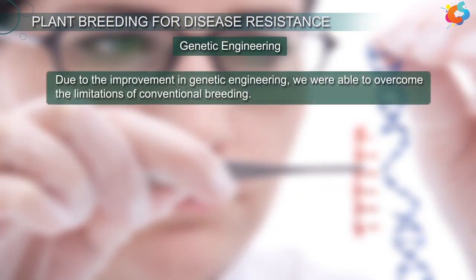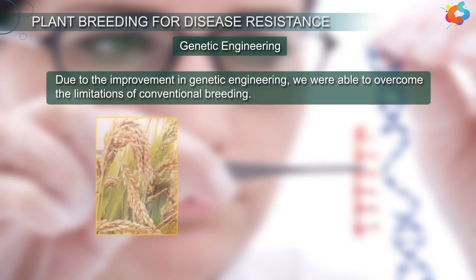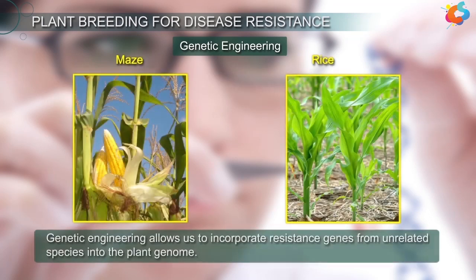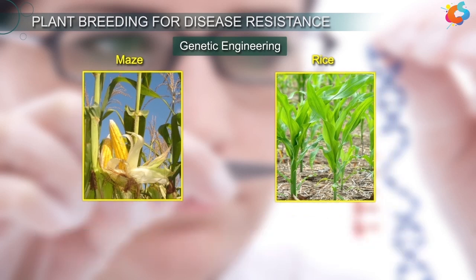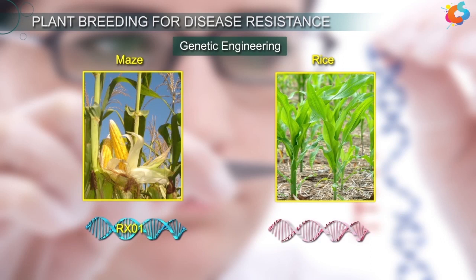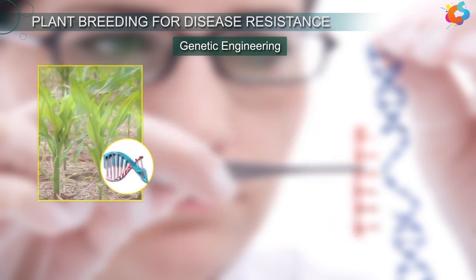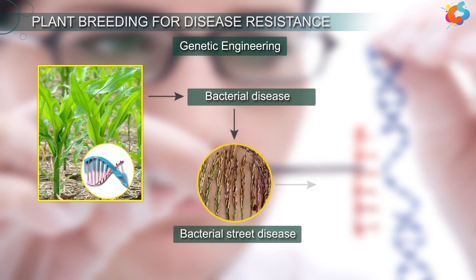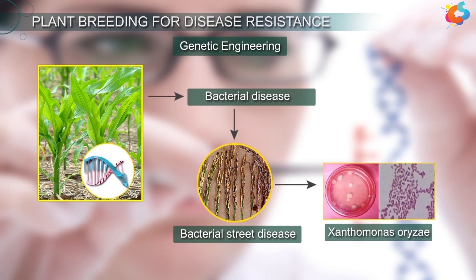Due to improvements in genetic engineering, we were able to overcome the limitations of conventional breeding. Genetic engineering allows us to incorporate resistance genes from unrelated species into the plant genome. For example, a resistance gene RXO1 from maize was incorporated into rice plant by this method, giving the rice plant resistance to a bacterial disease called bacterial leaf streak, caused by the pathogen Xanthomonas oryzae. Similarly, numerous other resistance genes can be incorporated into a single plant.